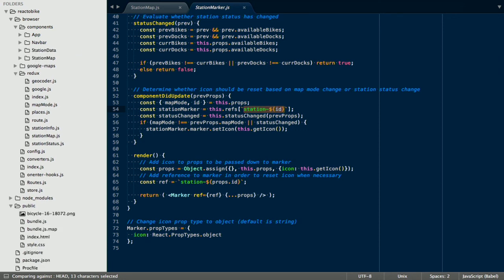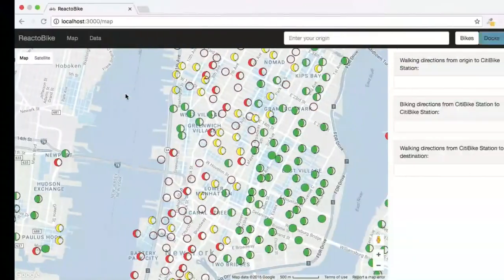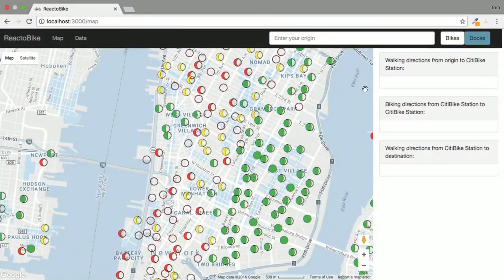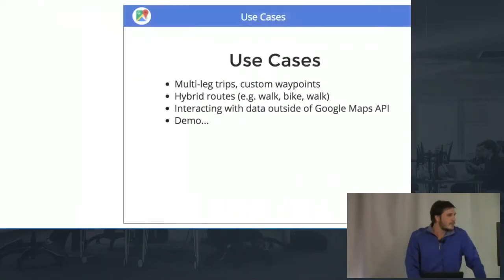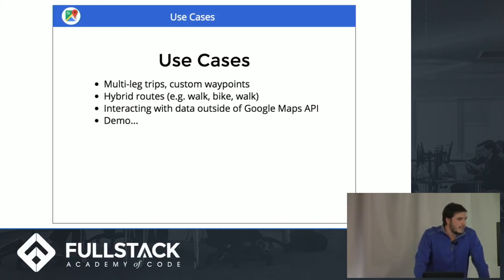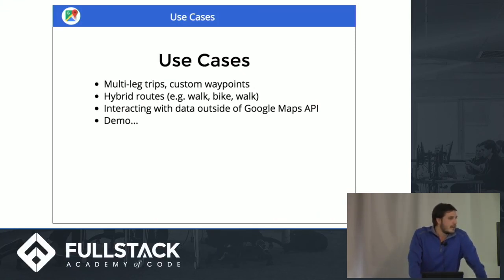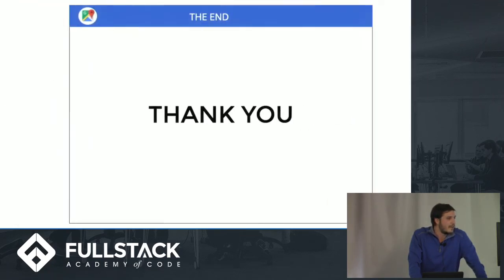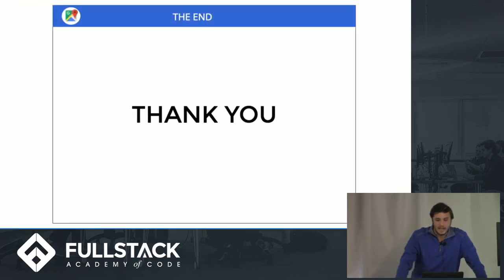So that was the app I built. The ways you can use the Directions API include multi-leg trips, hybrid routes, and interacting with data outside of Google Maps. That's all I have — thank you very much, everyone.